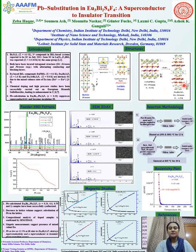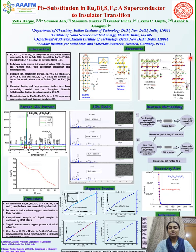An important class of compounds in the BiS2 based compounds are europium containing BiS2 superconductors. The first compound is EuFBiS2, and if we add one mole of EuF2 in two unit cells of EuFBiS2, we get another layered tetragonal structure with a stoichiometric formula of EU3Bi2S4F4.